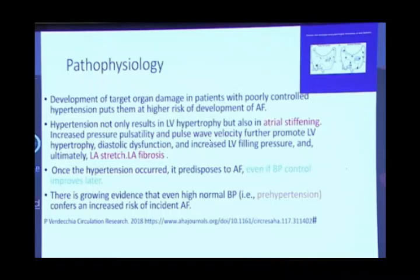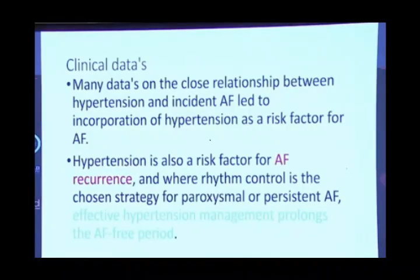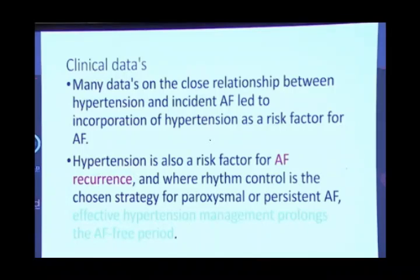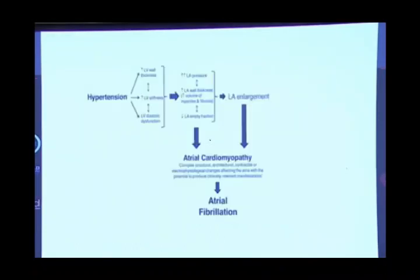Whether pre-hypertensive patients develop AF less than those classified as hypertensive by definition is not yet known. Clinical data has correlated that hypertension is a risk factor for AF, and also a risk factor for AF recurrence after ablation or drug therapy. So controlling hypertension may reduce the incidence of atrial fibrillation, and effective hypertension management prolongs the AF-free period, though it doesn't prevent recurrence 100%. This is one of hundreds of flowcharts in the literature showing how atrial fibrillation occurs in hypertension — wall thickness, stiffness, leading to LV changes and then atrial cardiomyopathy.